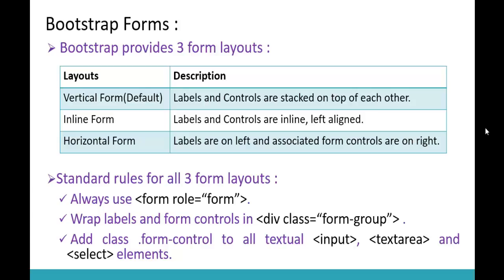The vertical form layout means the labels and the controls are stacked on top of each other. Now we are going to learn the second layout — the inline form layout. In an inline form layout, the labels as well as the controls are inline and left-aligned. To understand this clearly, let us jump to Visual Studio and start coding.